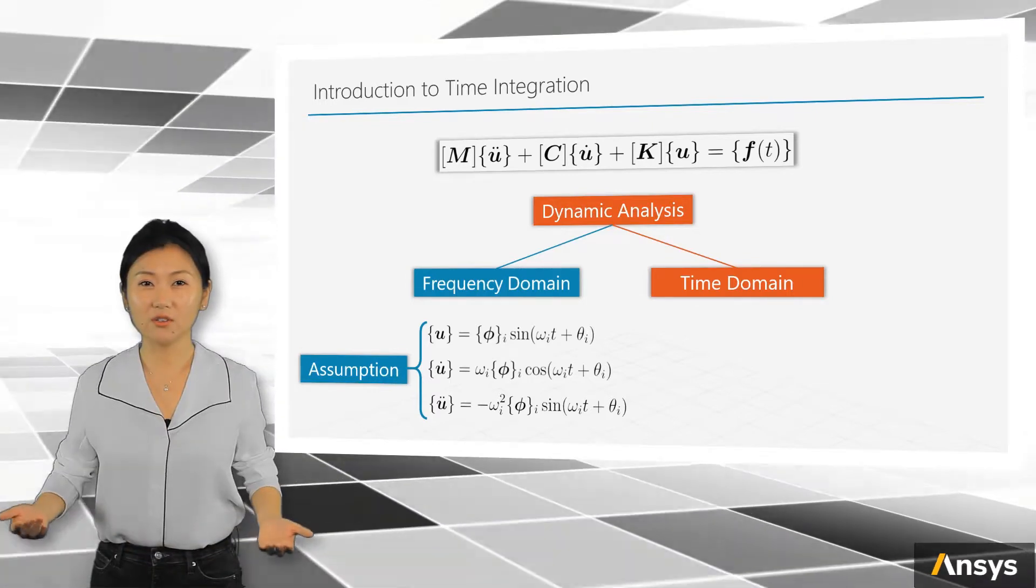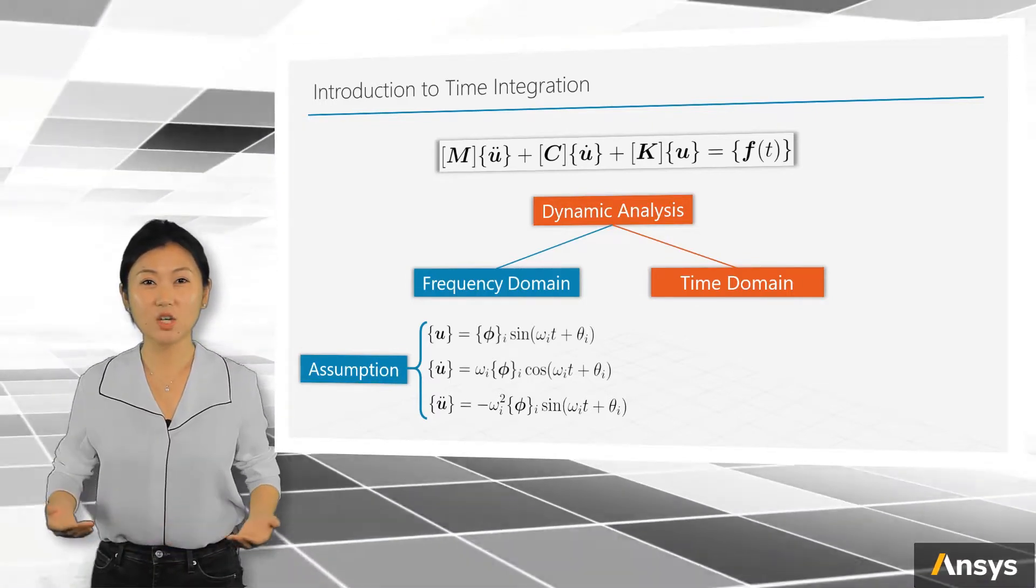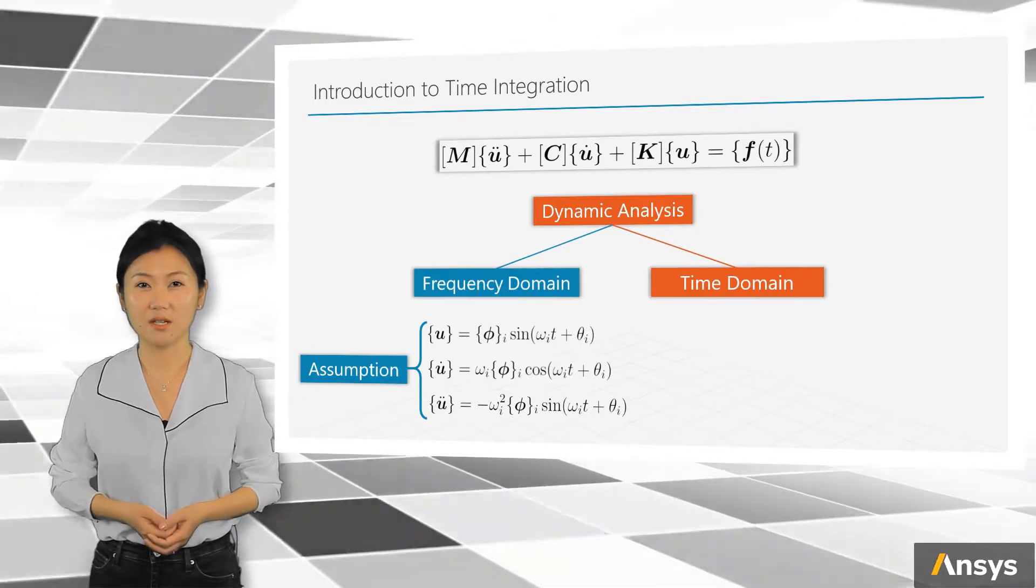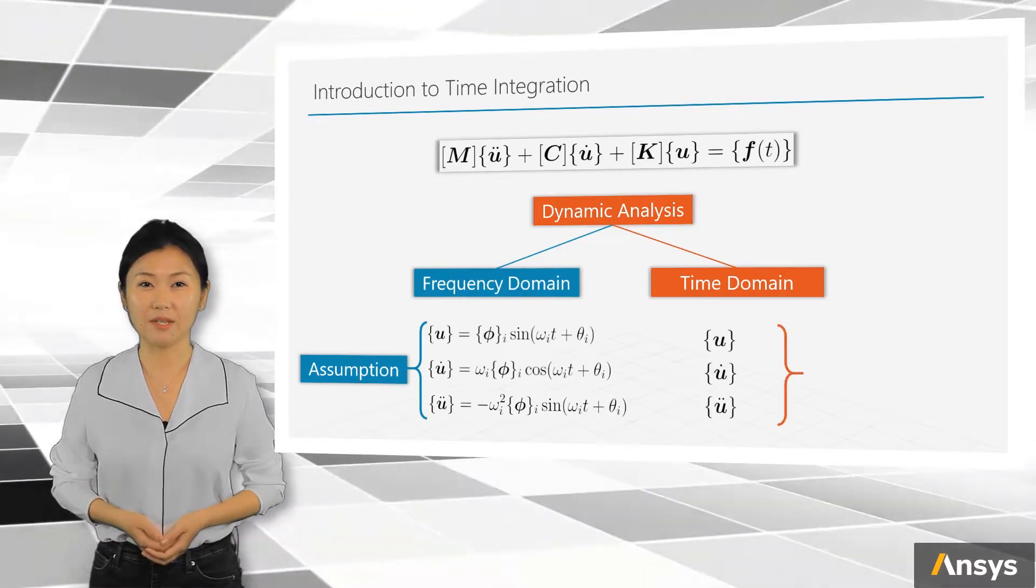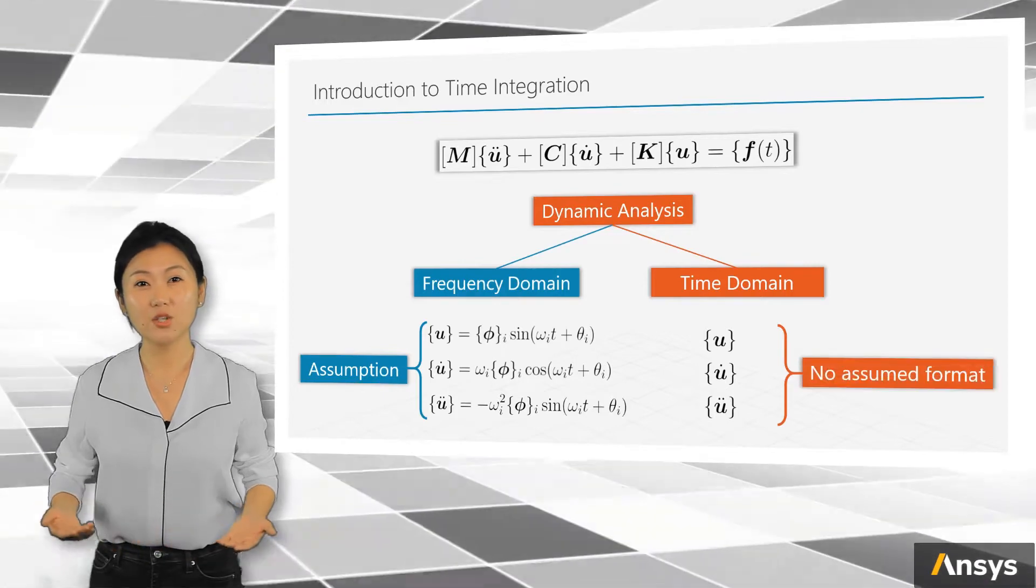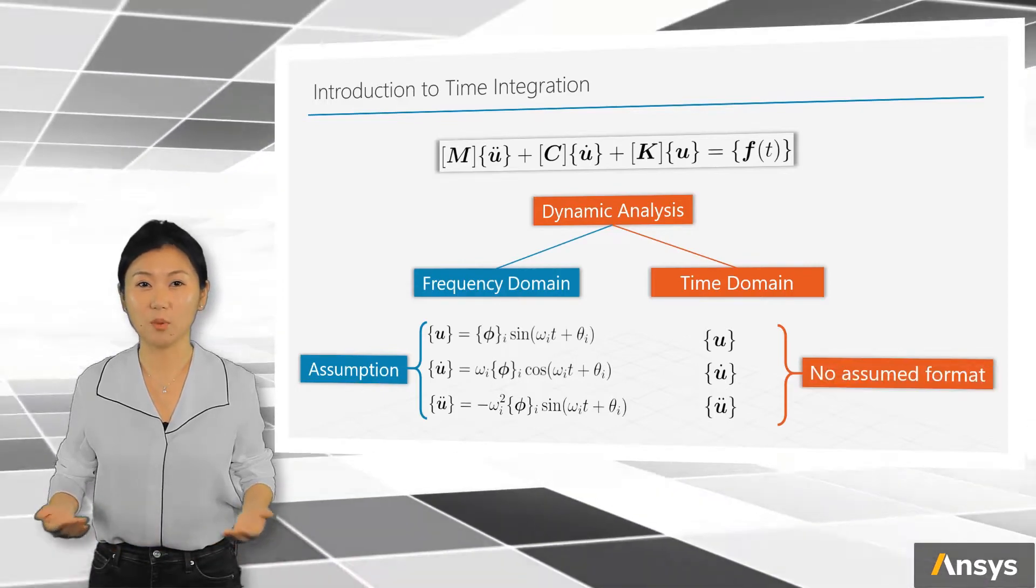However, for a time domain problem, there's no such assumption for the format of the unknowns. They're free to be whatever they can be. This means we need to directly solve the given equation of motion.